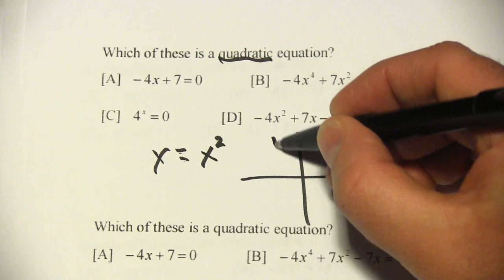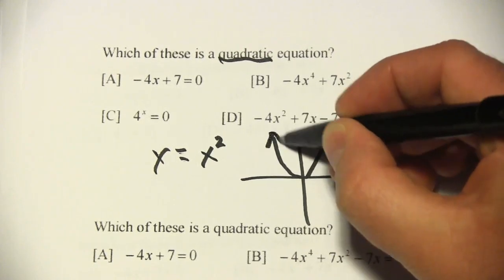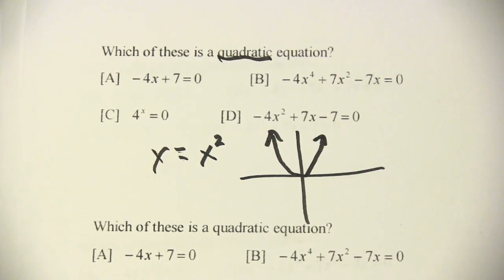When you graph that, it looks like a parabola. It's kind of a u-shape going up and out forever on both sides.